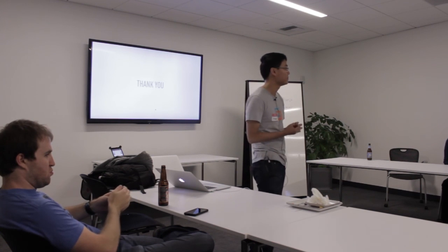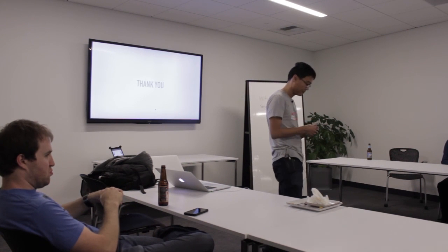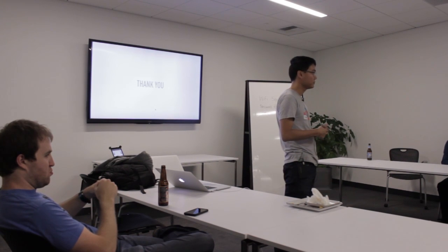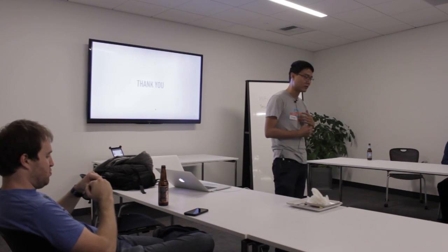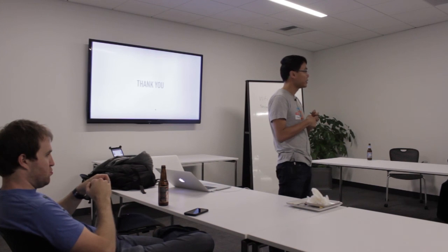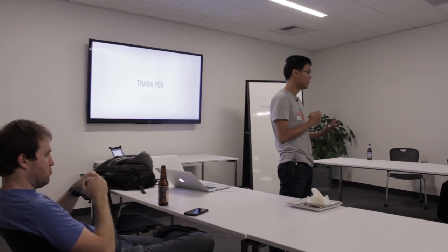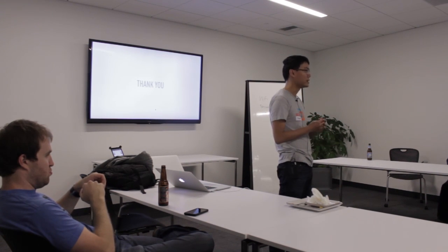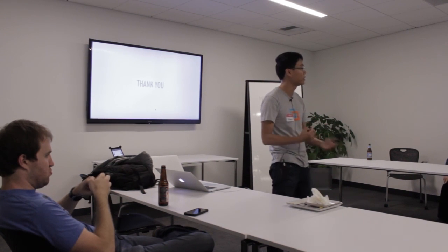Regarding caching on the broker node: Druid actually caches queries based on the fundamental unit of storage it understands, which are called segments. It always caches queries on a per-segment level — so it's not a full query cache, but a cache for the data pieces that are accessed as part of a query.